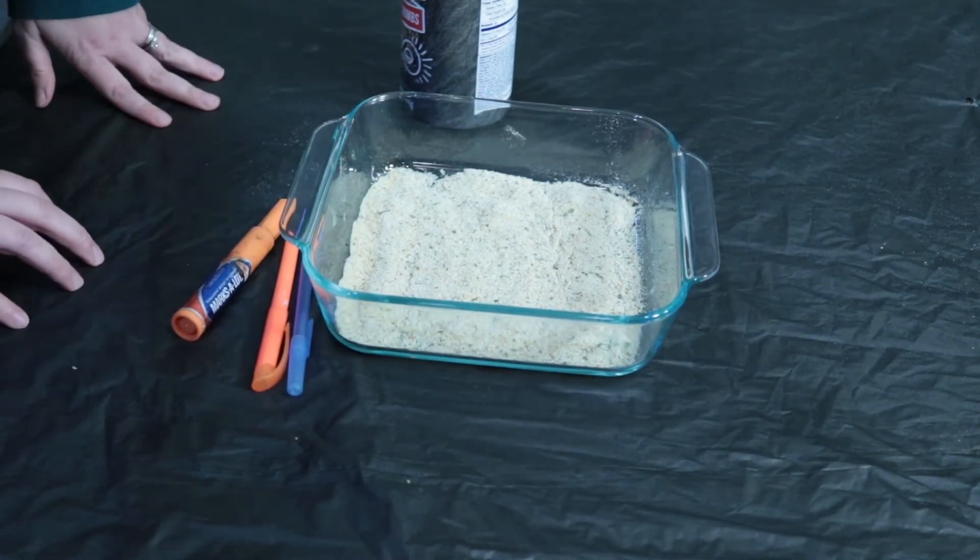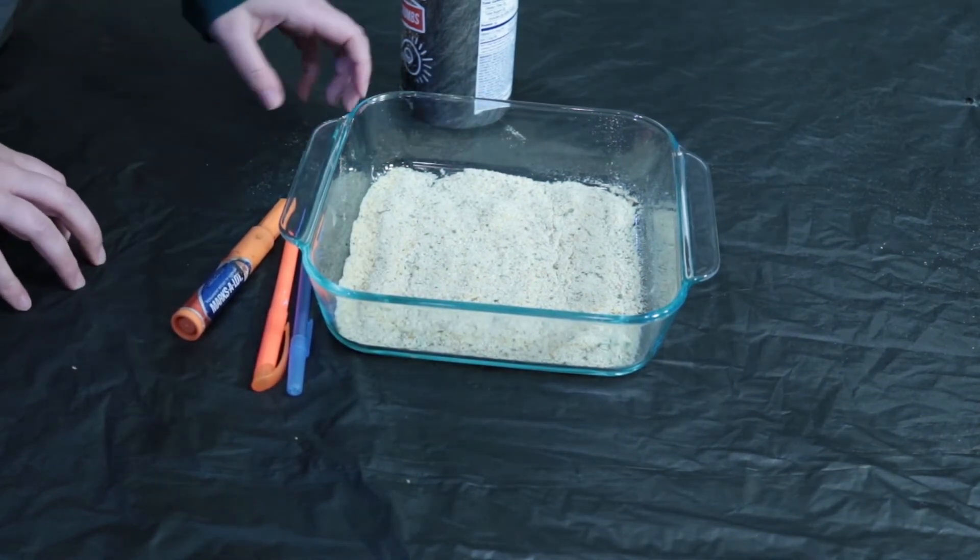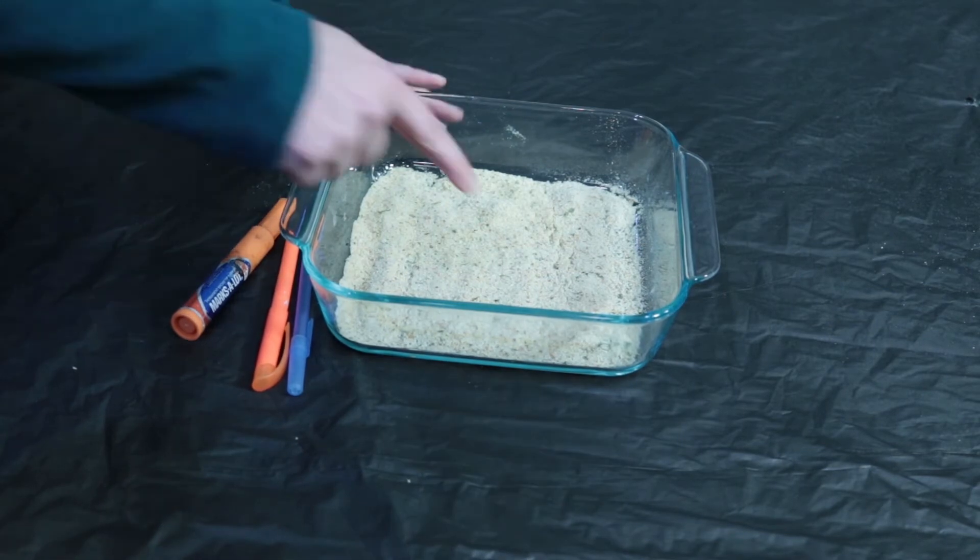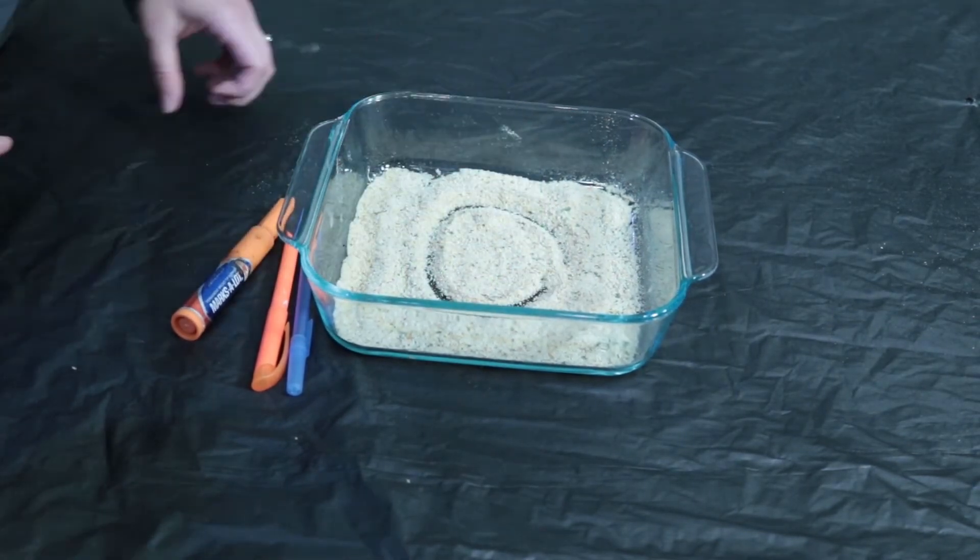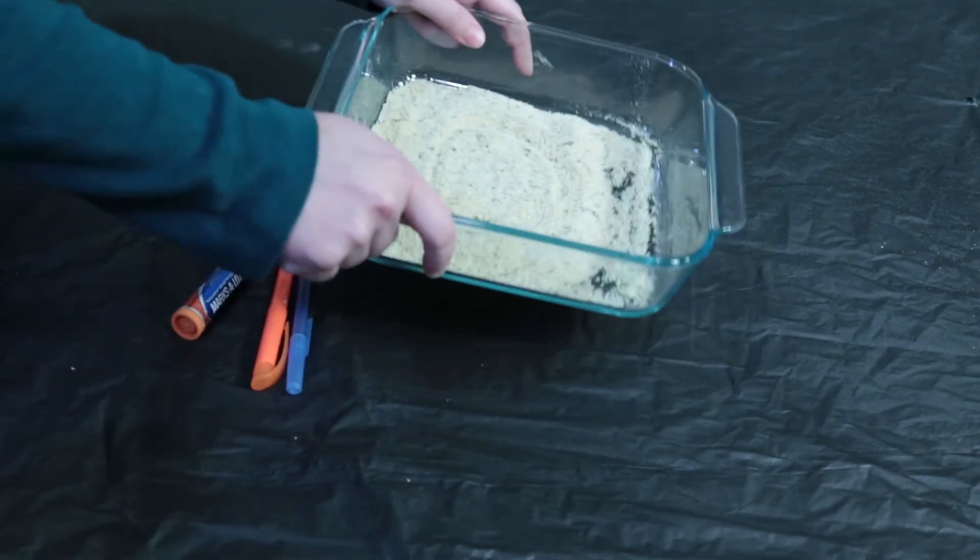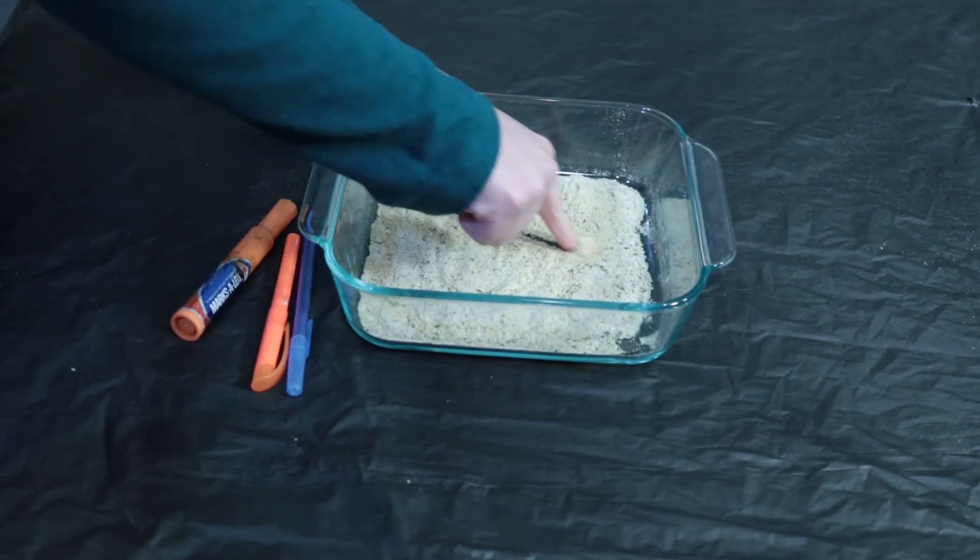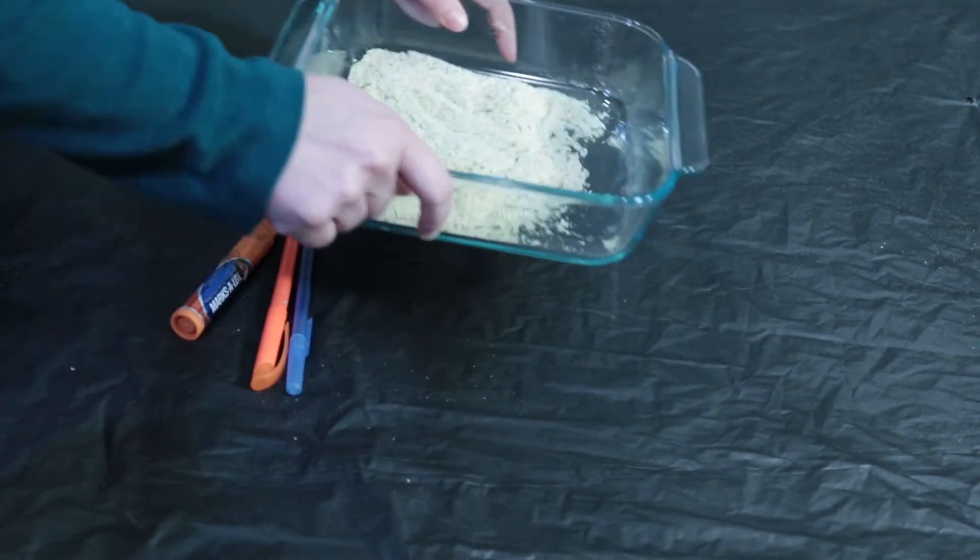you can flatten it out and then you can ask the kids to draw a shape. So you could start with a circle and then you can draw a circle and then you can erase it and then a triangle and then you can erase it.